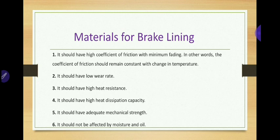The coefficient of friction of the material generally varies from 0 to 1. More than 1 is possible but not used in actual practice. The coefficient of friction should remain constant with changes in temperature — it should not change with temperature. If it changes, there may be heat generation and more wear and tear of the brake lining material. Therefore, the coefficient of friction must remain the same, and it should be high. This is the first required property for brake lining material.